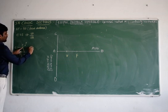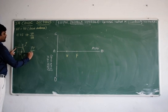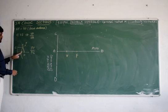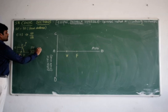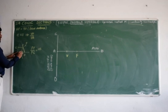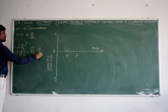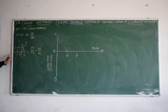Eccentricity may be also defined as the distance from point to focus to that of point to directrix. Or it may be also defined as point from vertex to focus to that of point from vertex to directrix. So this is nothing but eccentricity.